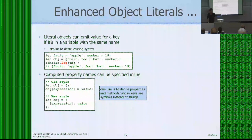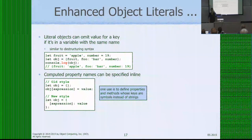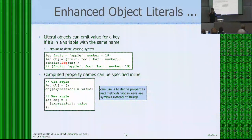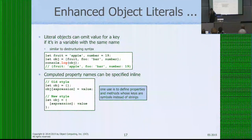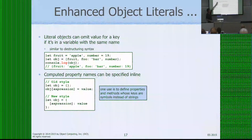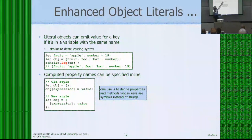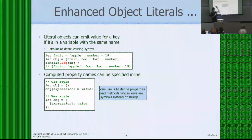Next new feature: enhanced object literals. If you have a variable whose name is the same as a property you'd like to add to some object, when you create a literal object you can just specify the key without the value — you don't have to write `score: score`. Here's an example: I have variables `true` and `number` and I want to create an object with those properties. I can just write their names directly. For other properties where the value is different, you still give a key and value as normal.